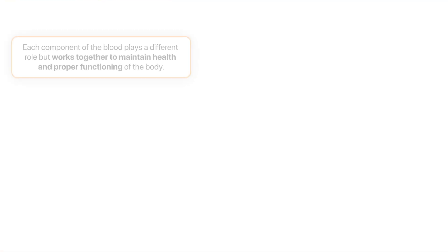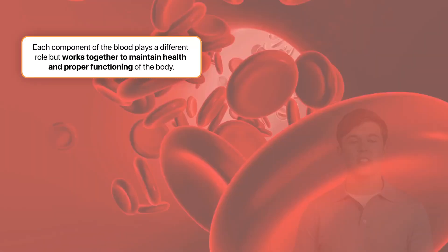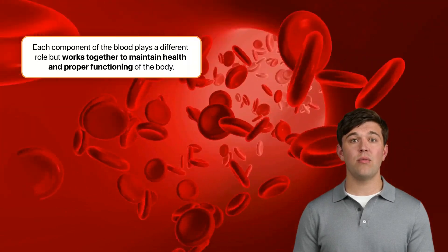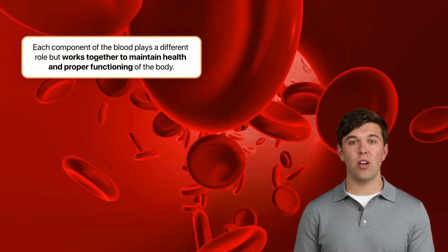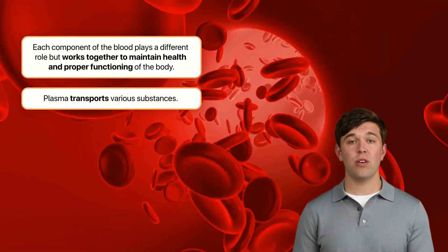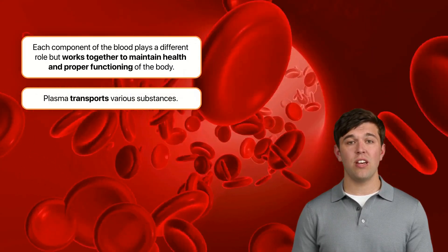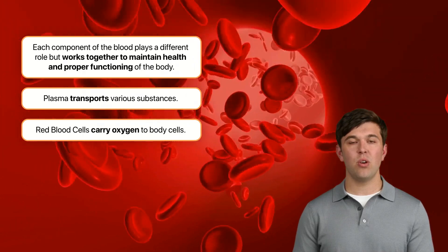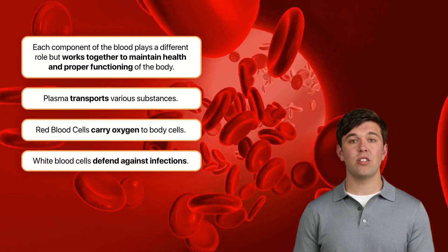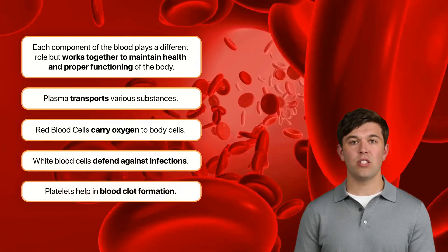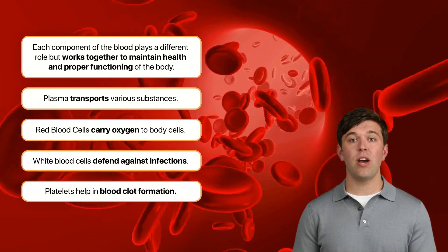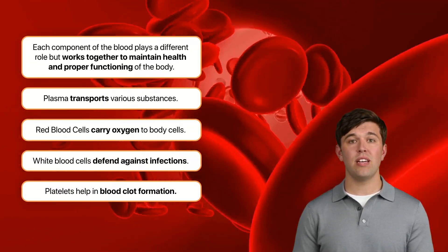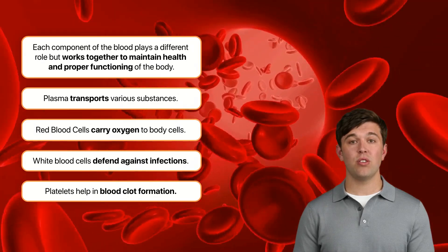To summarise, each component of blood plays a different role but works together to maintain health and proper functioning of the body. Plasma transports various substances. Red blood cells carry oxygen to body cells. White blood cells defend against infections, and platelets help in blood clot formation. By understanding these concepts, you gain essential knowledge about the functions of blood and the importance of its components.